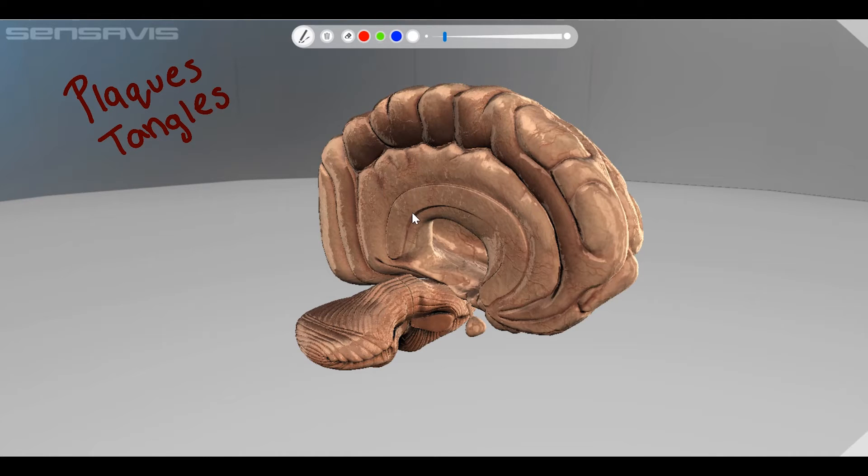Generally, these plaques and tangles will first attack your hippocampus, which is located right around here in your brain. Now the hippocampus is what's responsible for your short-term memory.